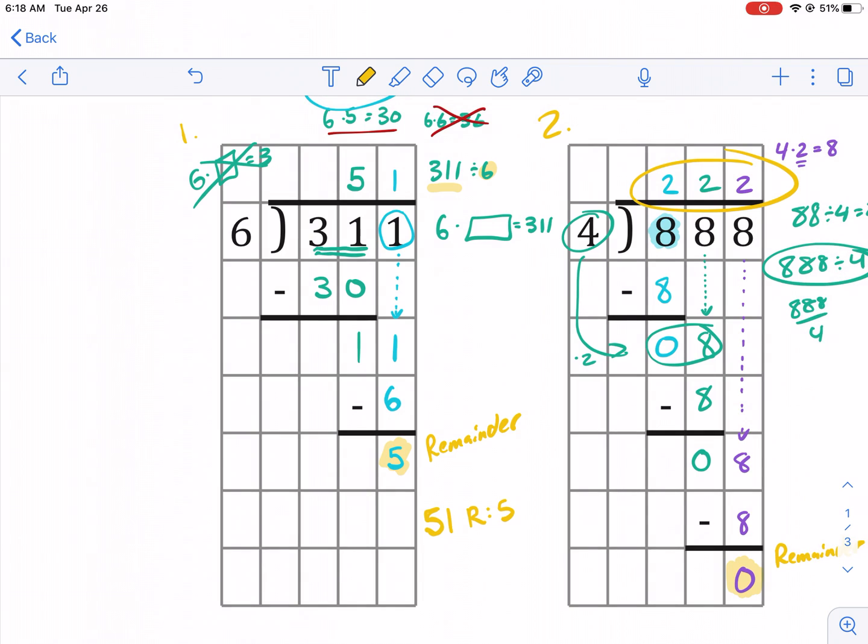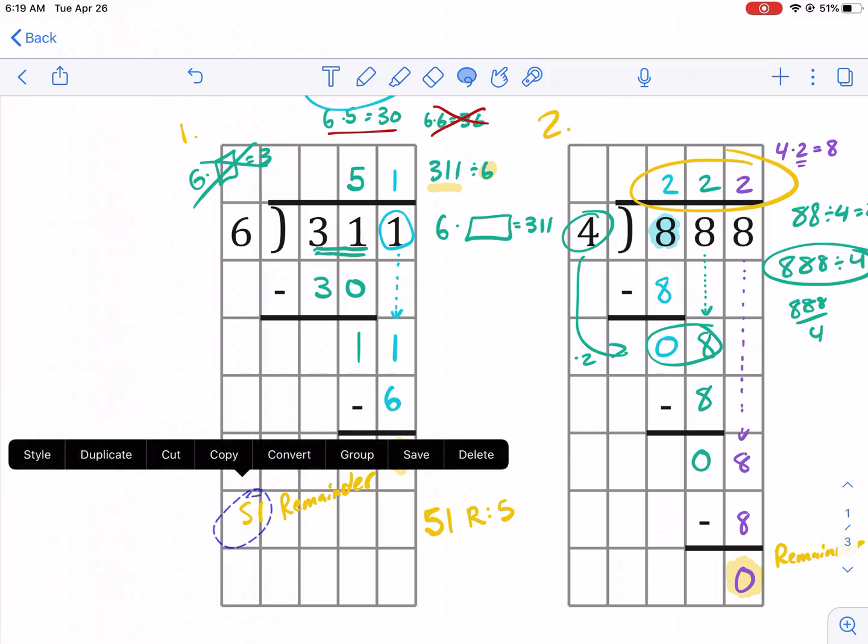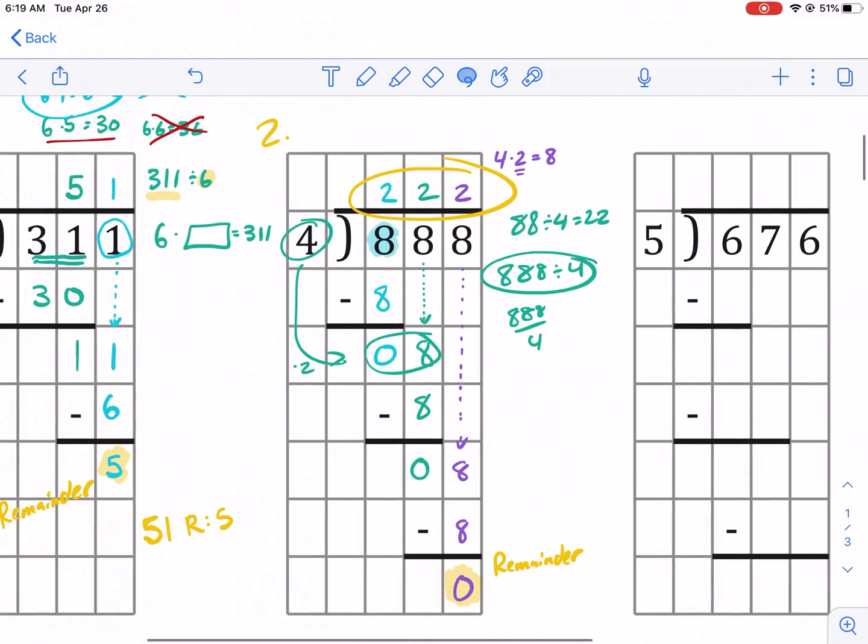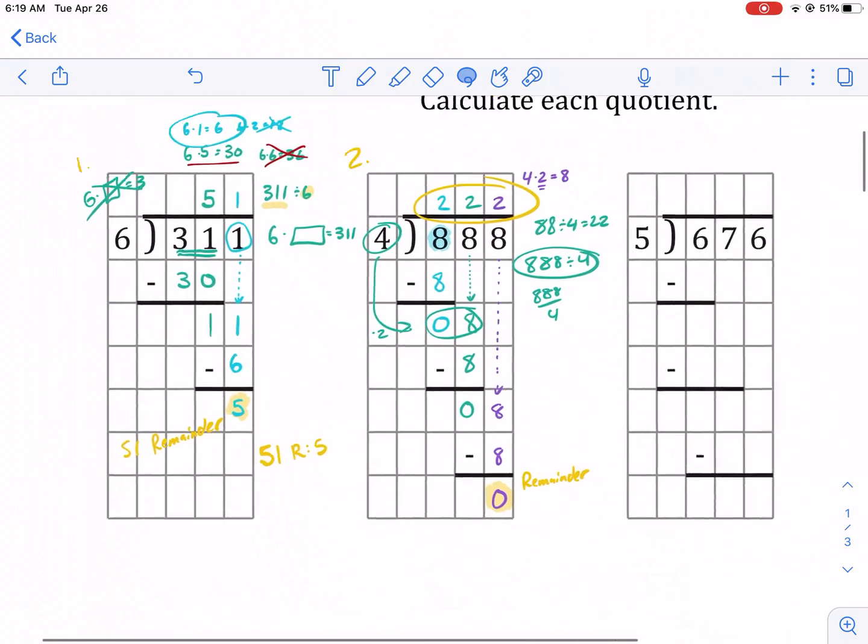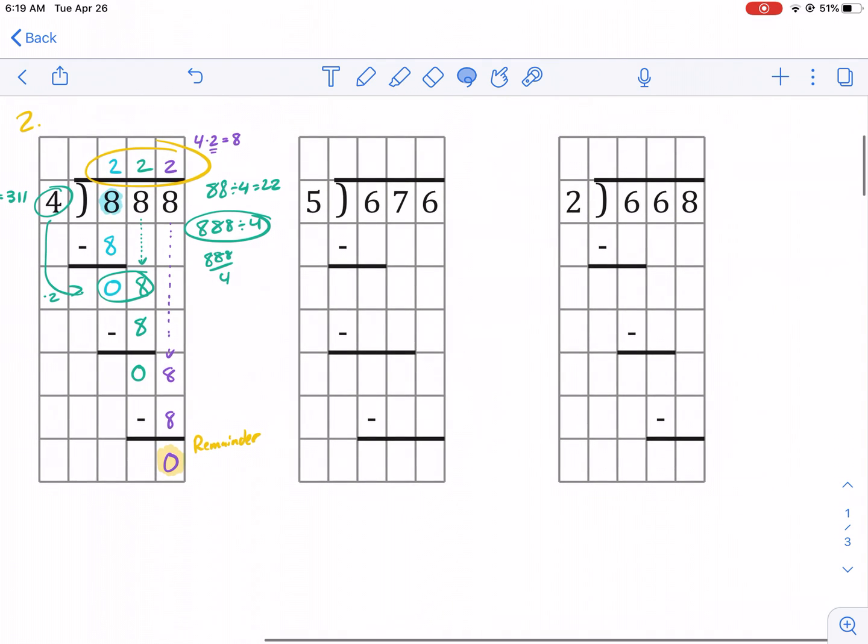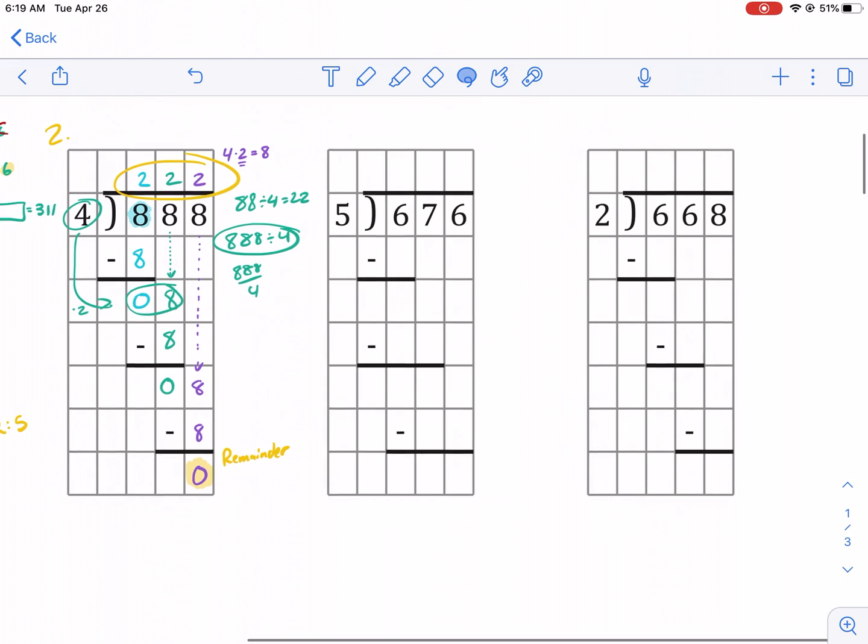Or you can just write out the word remainder. So 51 remainder five. That would be another way to say it. Let me move this over. So 51 remainder five. I think you guys get the point. So 51 remainder five. And that's the whole step. Obviously, all these little templates are going to tell you how many steps you need to have in place here. And that's going to be the process.